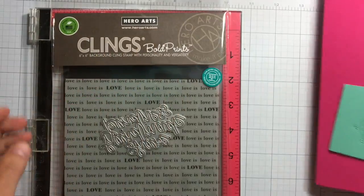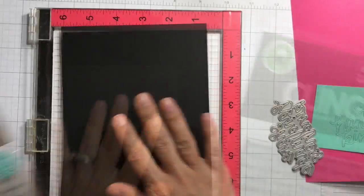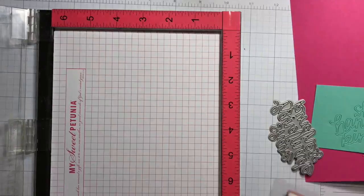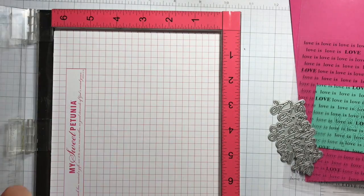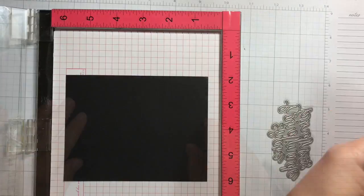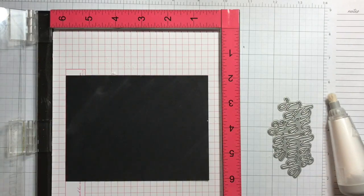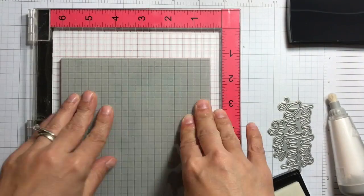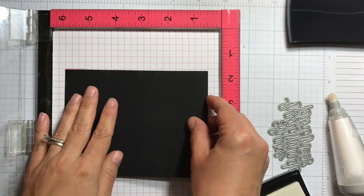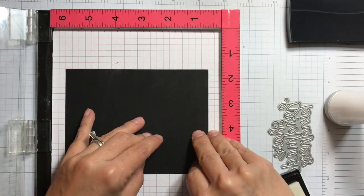I'm lining up the background stamp in my Misti original and I'm going to stamp with Versamark onto some black cardstock. So I'm doing a couple backgrounds here.